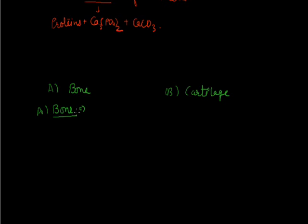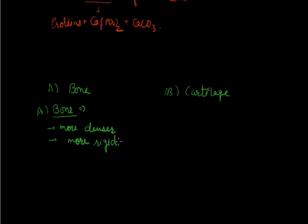Bone forms our main skeletal system. It is more rigid and more dense as compared to cartilage, and provides protection to different body organs. In the matrix of bone, there is a lot of deposition of calcium carbonate and calcium phosphate.